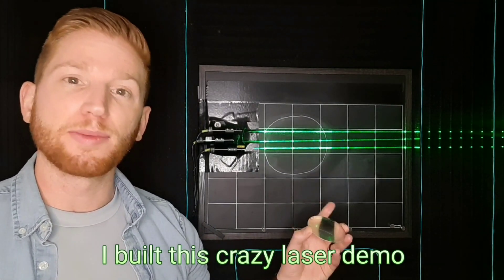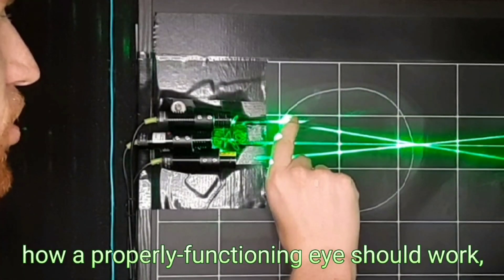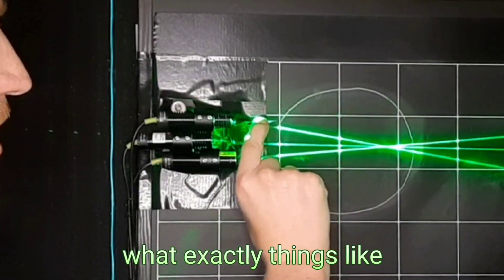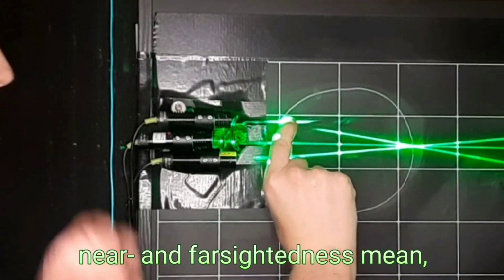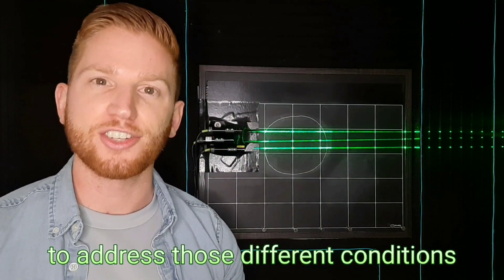I built this crazy laser demo in my house to easily show ideas like how a properly functioning eye should work, what exactly things like near and farsightedness mean, and how corrective lenses or contacts adjust your vision to address those different conditions.